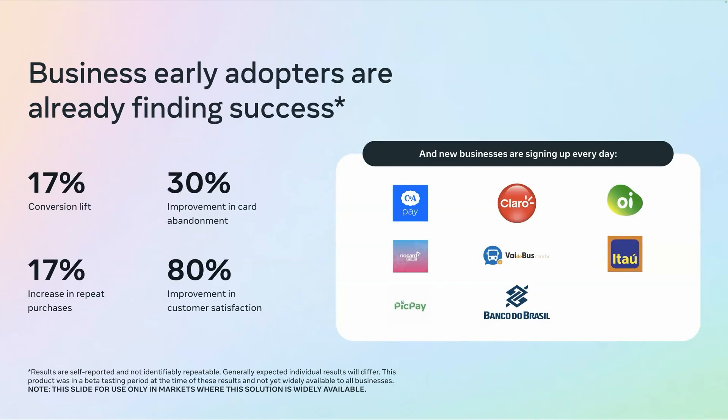We are seeing success with partners and early adopter businesses. Tested partners see success in conversions, trust, and retention among early WhatsApp payment adopters. Utility and transportation sectors reported a 15% sales increase and positive ROI. By the Boss observed a 17% rise in repeat purchases within 30 days, enhancing user re-engagement. Reocard improved customer satisfaction by 90% with integrated flows.